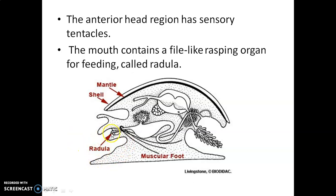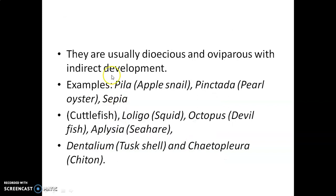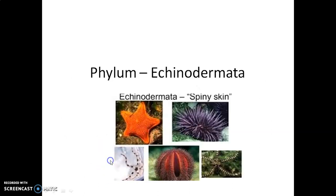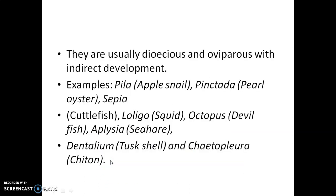The mouth contains a file-like rasping organ for feeding called the radula. Mollusca are usually dioecious — meaning there are separate female and male members — and oviparous, meaning they lay eggs, with indirect development. Examples include: Pila (apple snail), Pinctada (pearl oyster), Sepia (cuttlefish), Loligo (squid), Octopus (devilfish), Aplysia (sea hare), Dentalium (tusk shell), and Chiton.